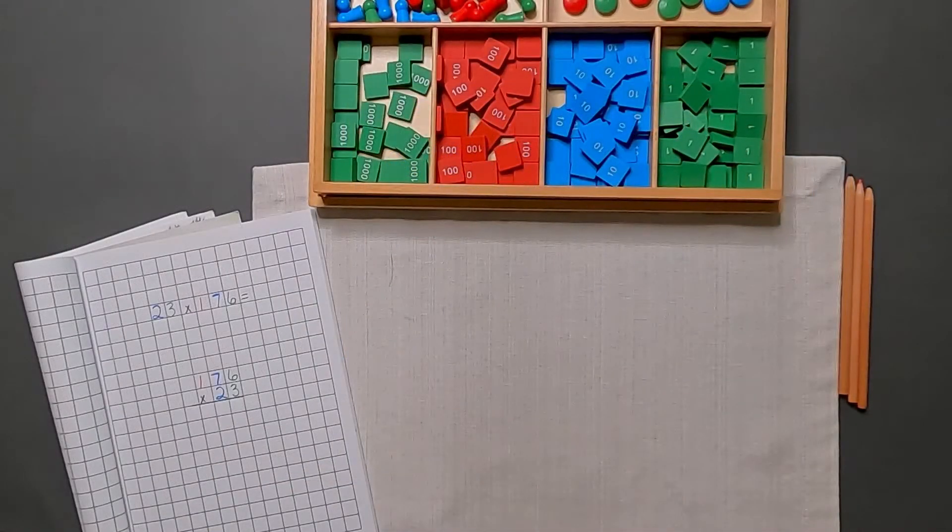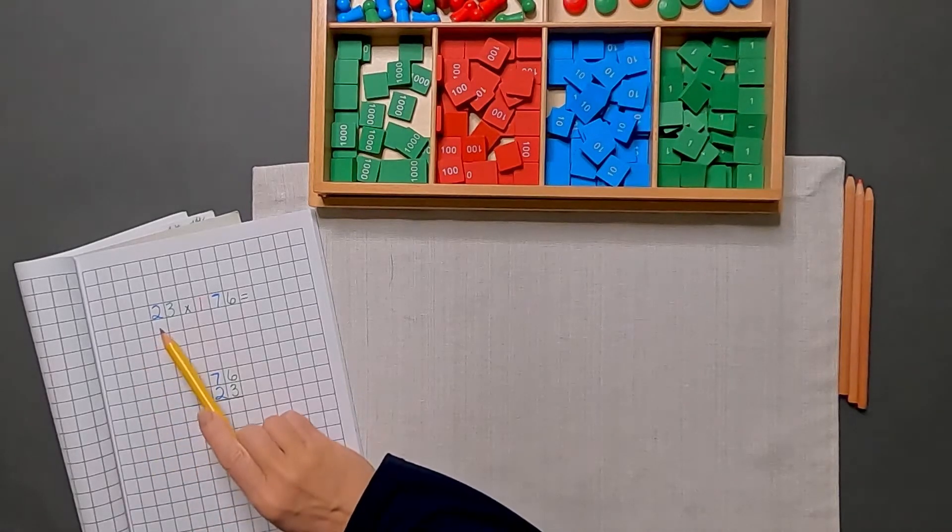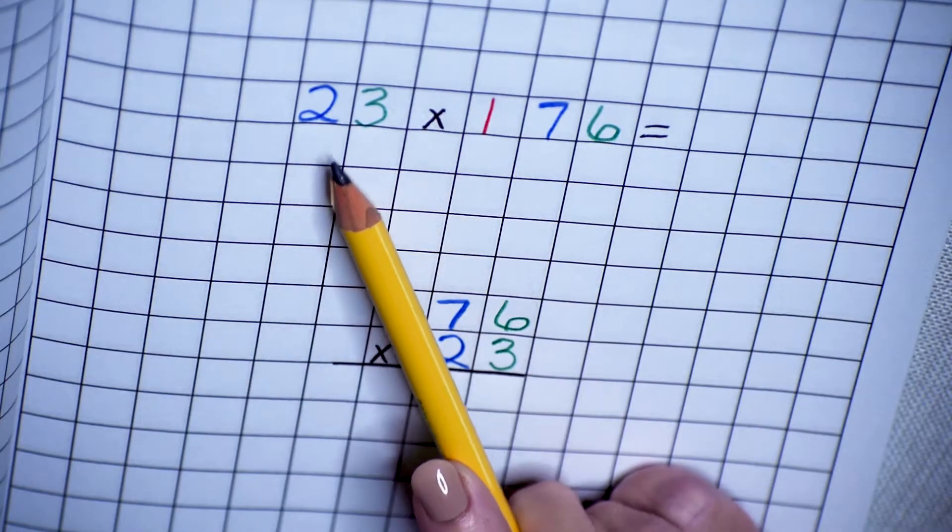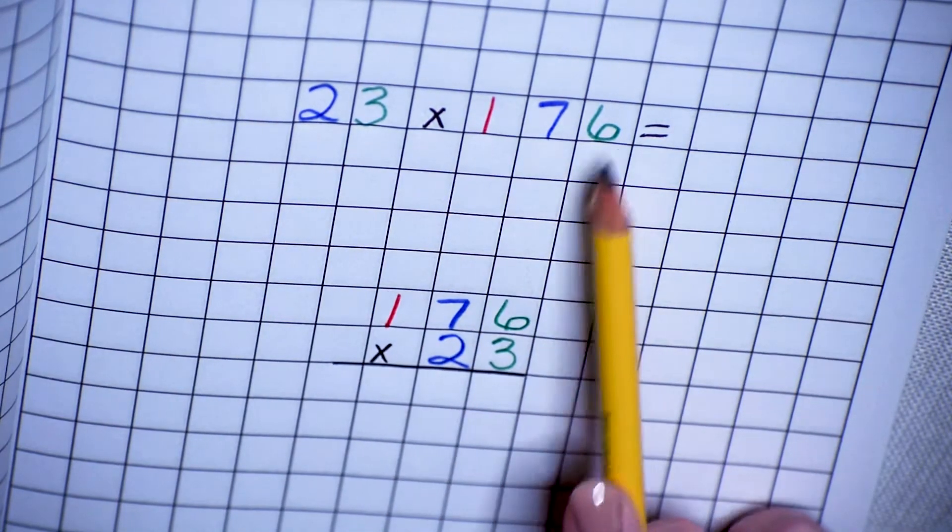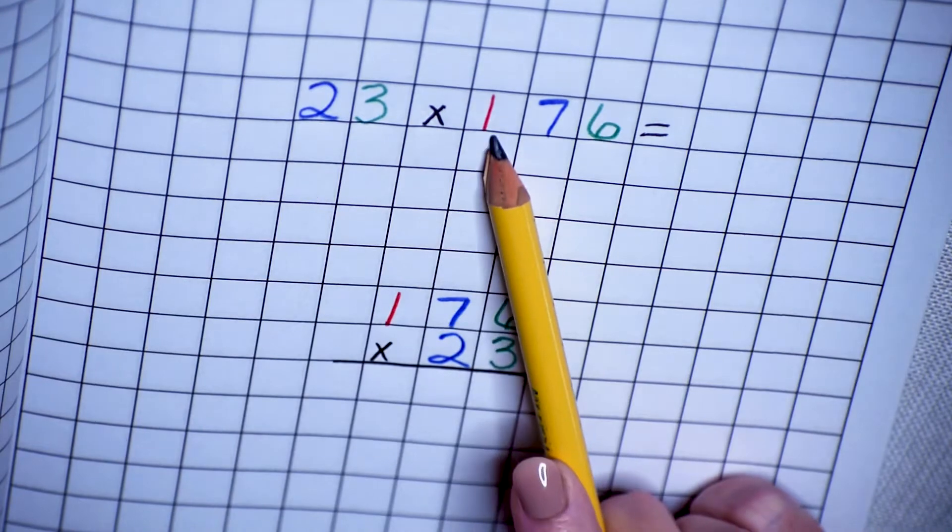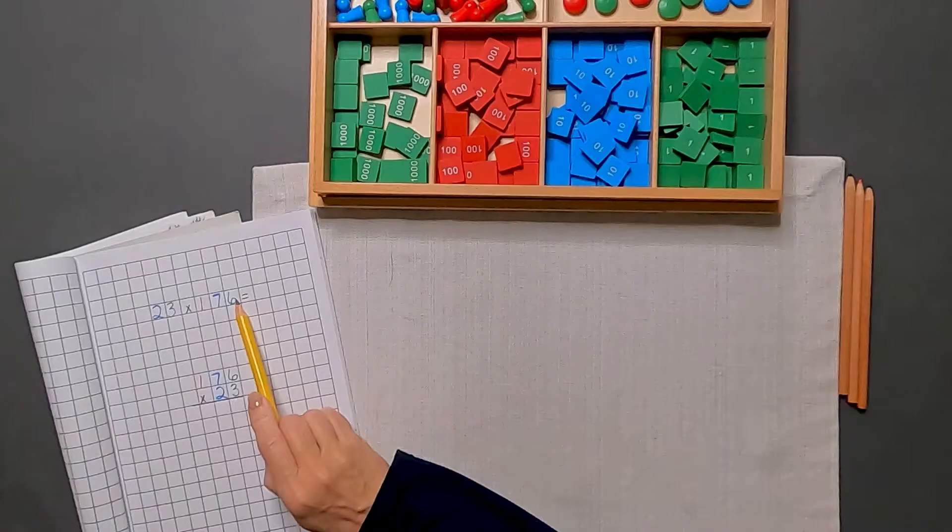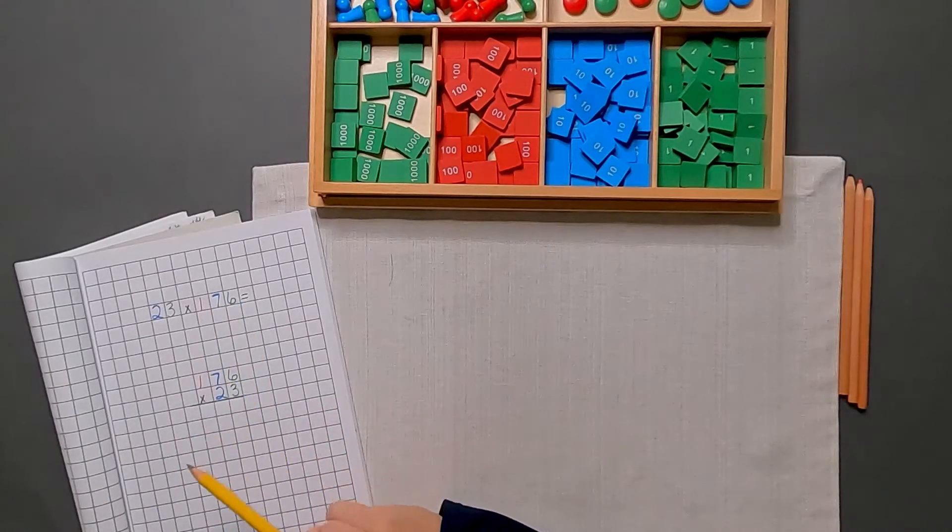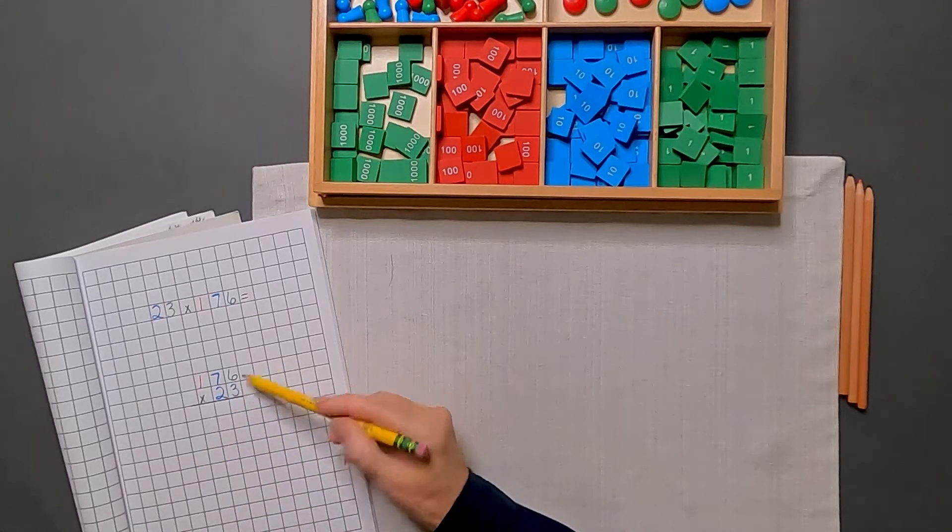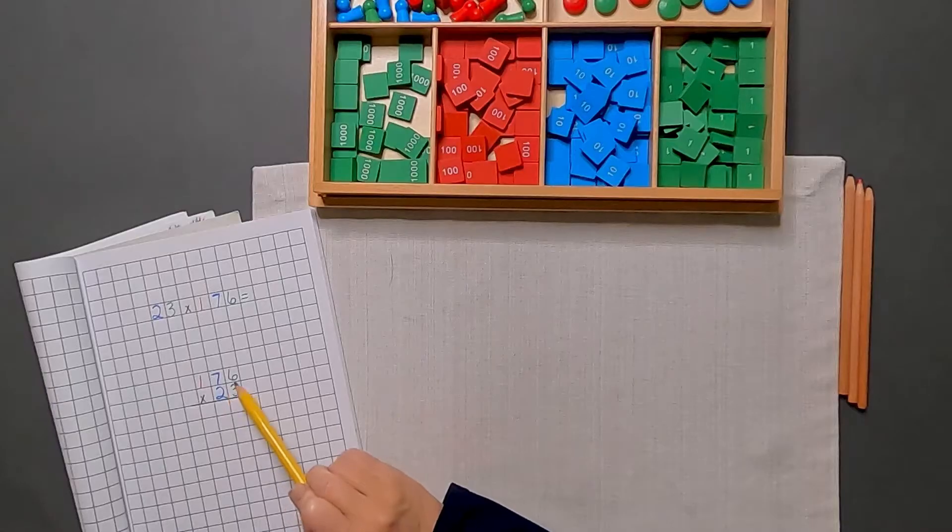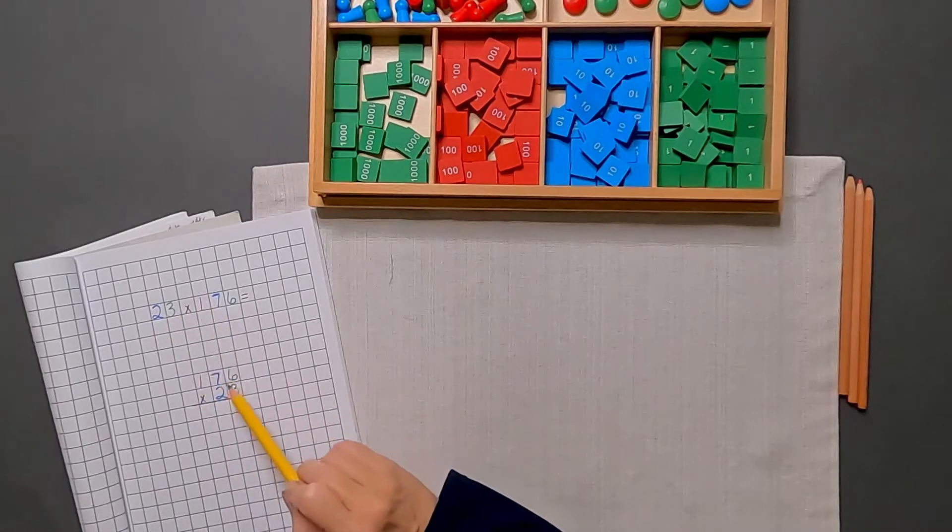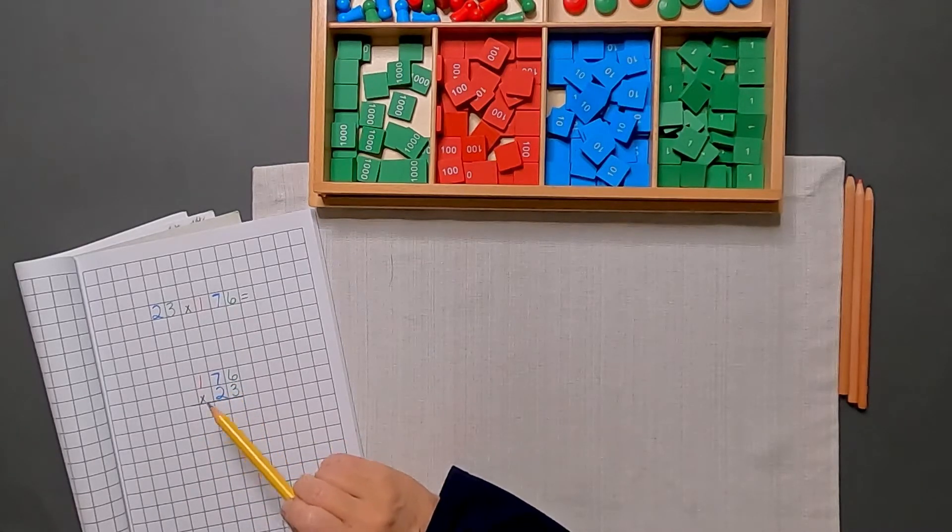In this activity, we're going to be using our stamp game to do some multiplication. I wanted to point out that when you're doing multiplication questions, sometimes you'll see it written out horizontally like this, 23 times 176. Sometimes you'll see it written vertically, 23 times 176. It doesn't matter how these are written. You're going to get the same answer.